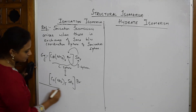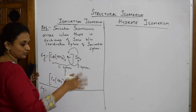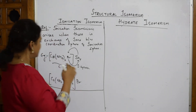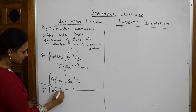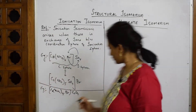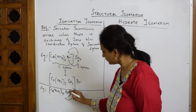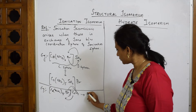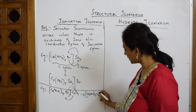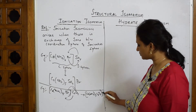One more example to remember — two examples are more than enough since they'll barely ask for one mark. Take [Co(NH3)5Br]C2O4 — bromine is in the coordination sphere, oxalate (C2O4) is in the ionization sphere. Exchanging gives [Co(NH3)5C2O4]Br — oxalate enters the coordination sphere and bromine comes out. That's another example of ionization isomerism.